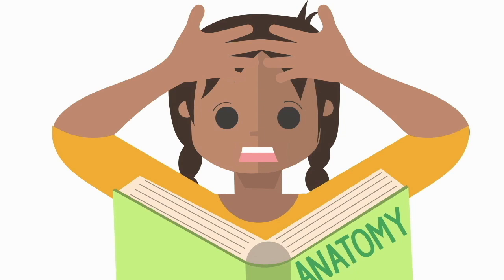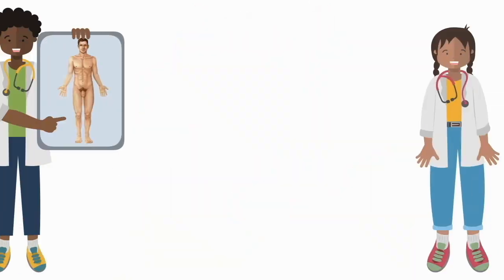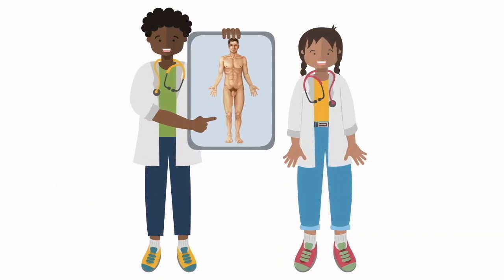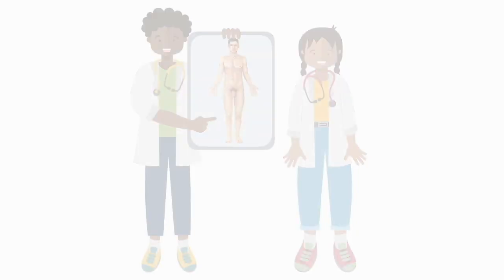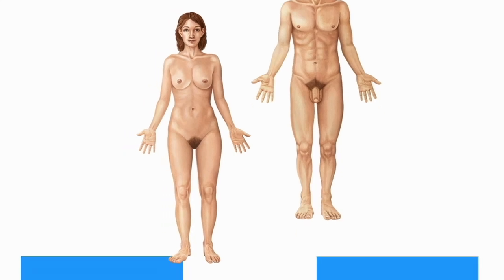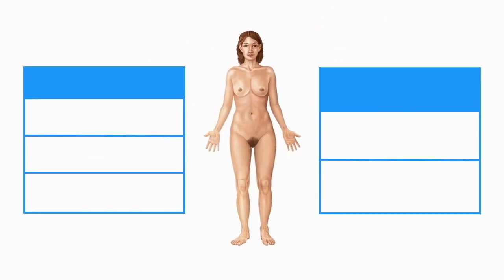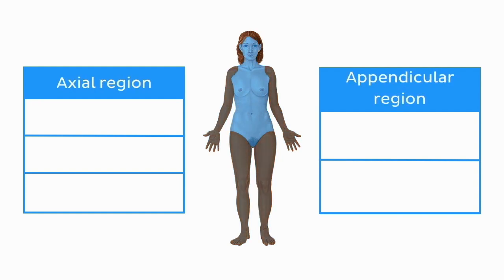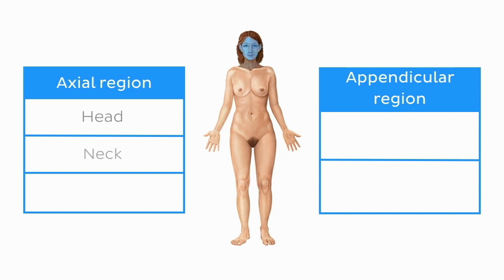These concepts are also fundamental to communicate effectively in day-to-day clinical practice. In this tutorial, we will use images of both male and female individuals to demonstrate the regions in question. However, it is important to note that, for the most part, the regions are exactly the same and are not sex-specific. Broadly speaking, the body can be divided into two primary areas: the axial and the appendicular regions. The axial region consists of the head, neck, and trunk.